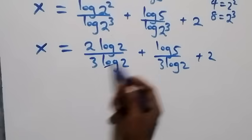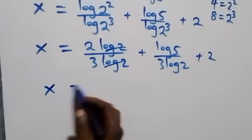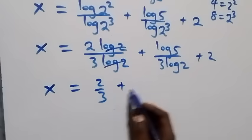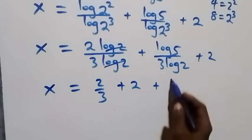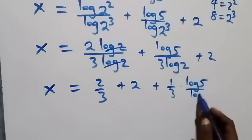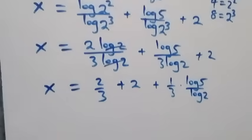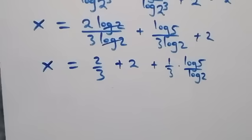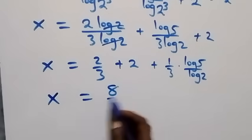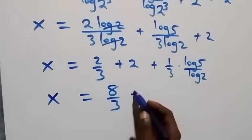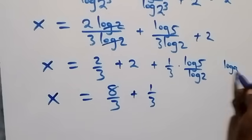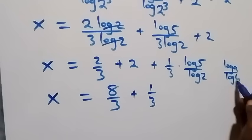Log 2 cancels each other, and we have x equals 2 over 3, plus 1 over 3 times log 5 over log 2, plus 2. Then 2 over 3 plus 2 is the same as 8 over 3, so we have x equals 8 over 3 plus 1 over 3 times log 5 over log 2.